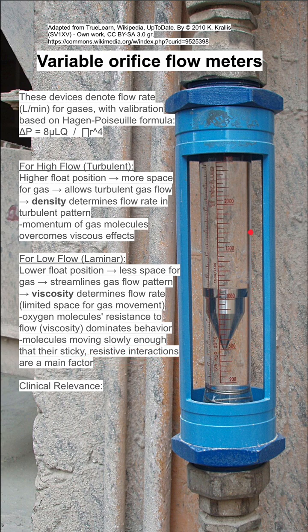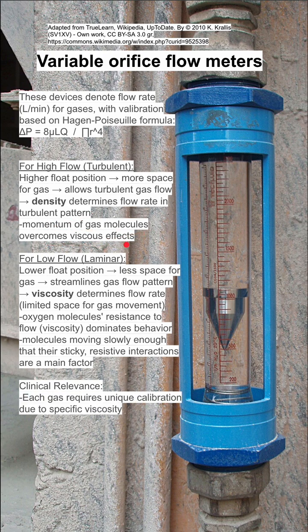Think of this as friction when the flow is low. When the flow is higher and the bobbin is in a higher position, there is more space for the gas to go around, allowing for turbulent gas flow. In this case, density is the primary gas characteristic that determines the flow rate, and the momentum of the gas molecules helps them overcome the viscous effects.